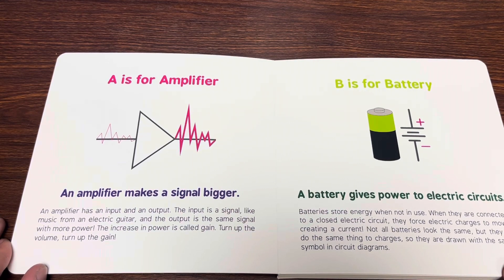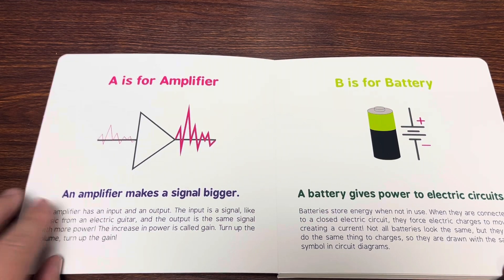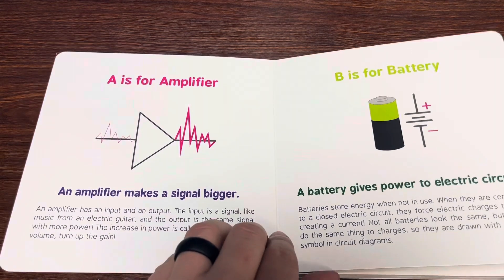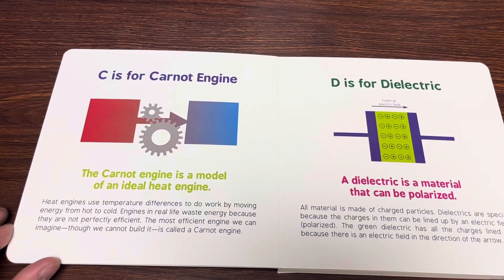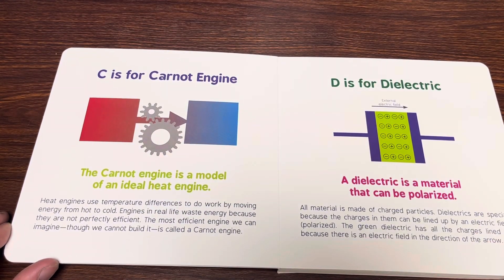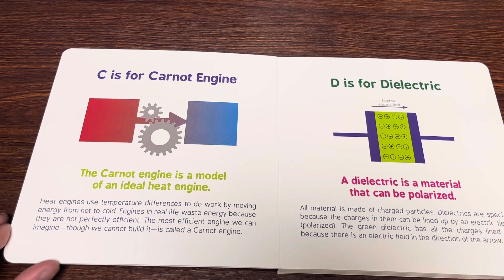B is for battery. The battery gives power to electric circuits. C is for Carnot engine. The Carnot engine is a model of an ideal heat engine.